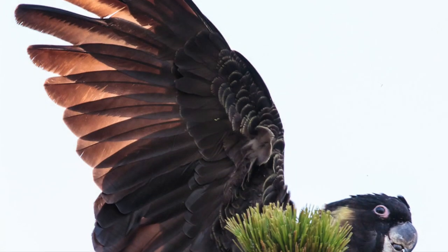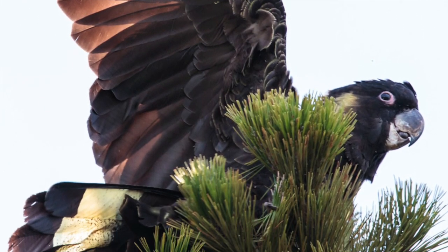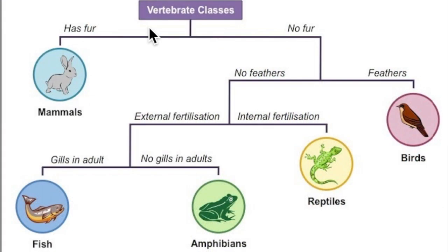So let's use the dichotomous key to work out what kind of animal it was. This is the animal that I could see up in the tree. To help me identify what type of animal this is, I'm going to use this chart, and this is an example of a dichotomous key.